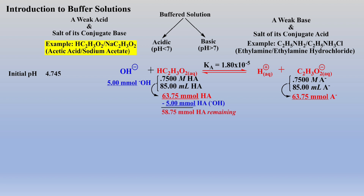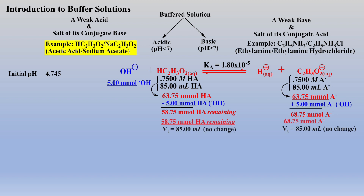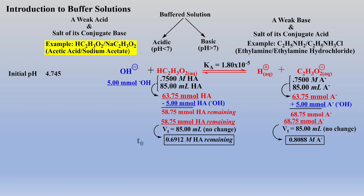The 5 millimoles of hydroxide will neutralize 5 millimoles of weak acid, which affords 5 additional millimoles of conjugate base. Now the new molarities can be calculated, assuming there is no change in volume after the solid sodium hydroxide was added.